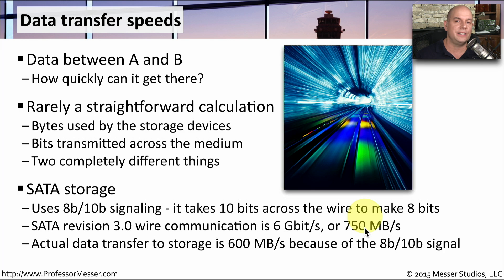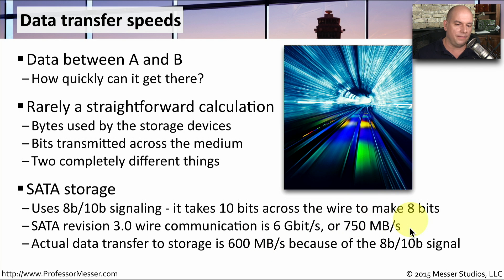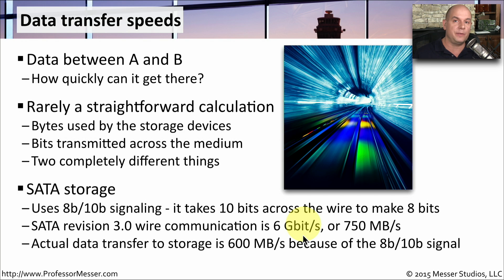But of course SATA has this 8B10B signaling, so it's sending 10 bits to ultimately get eight. So we're getting only really 80% total throughput through these devices. If we look at the storage, we're really communicating 600 megabytes per second because it's 80% of that 750 megabytes of actual data sent across the link. So you need to be very careful when looking at SATA version 3 specifications — it may say it communicates at six gigabits per second and can store information at 600 megabytes per second, and the difference is because of the 8B10B signaling.